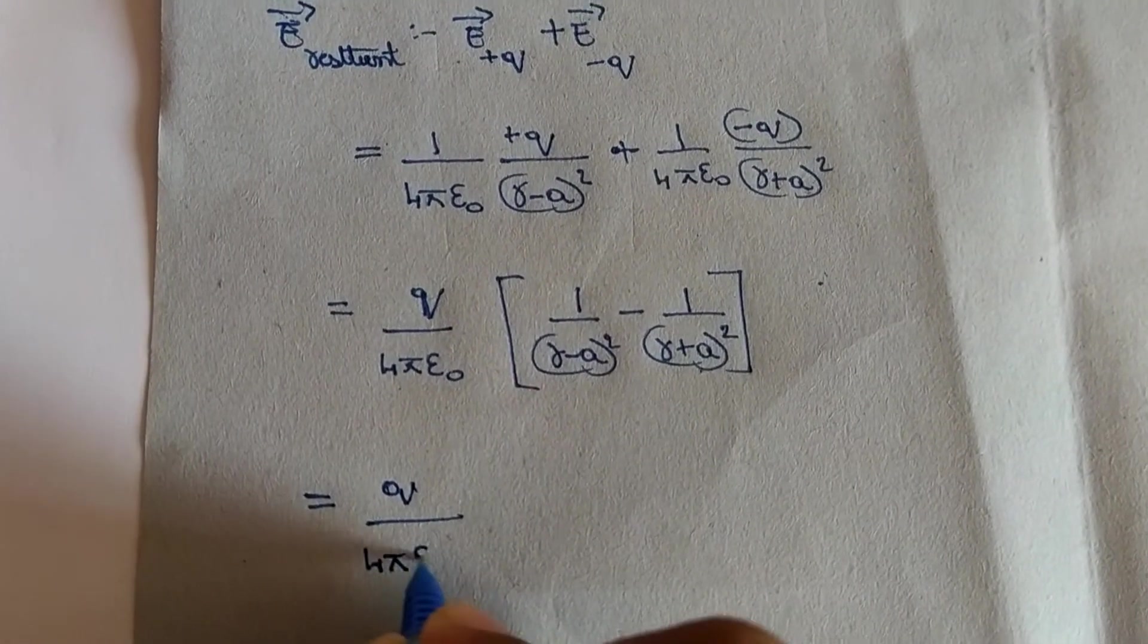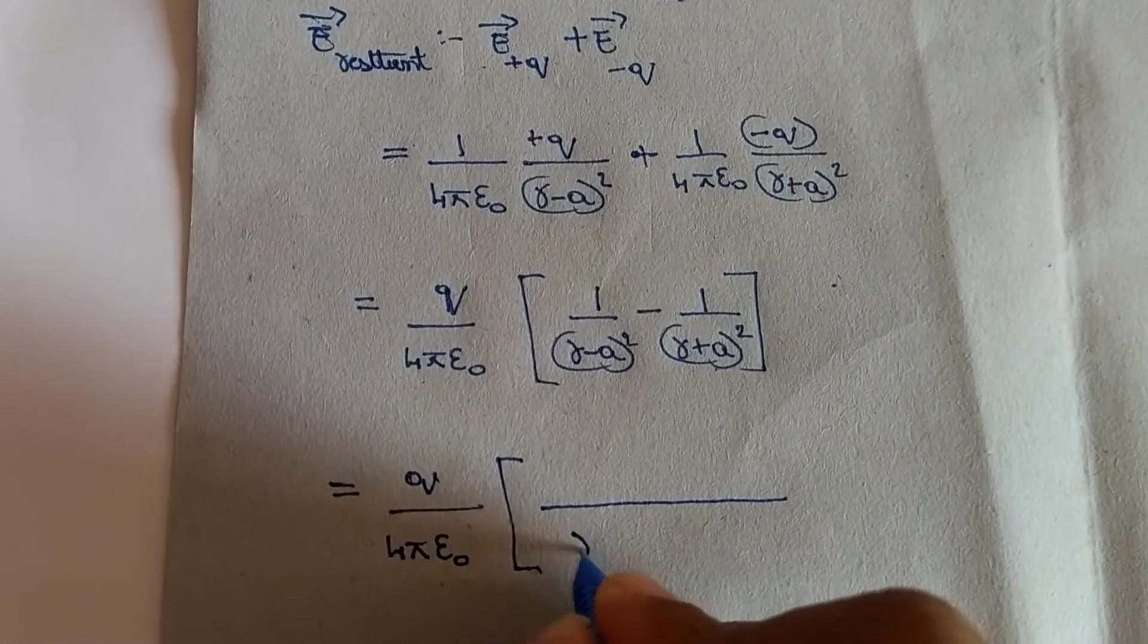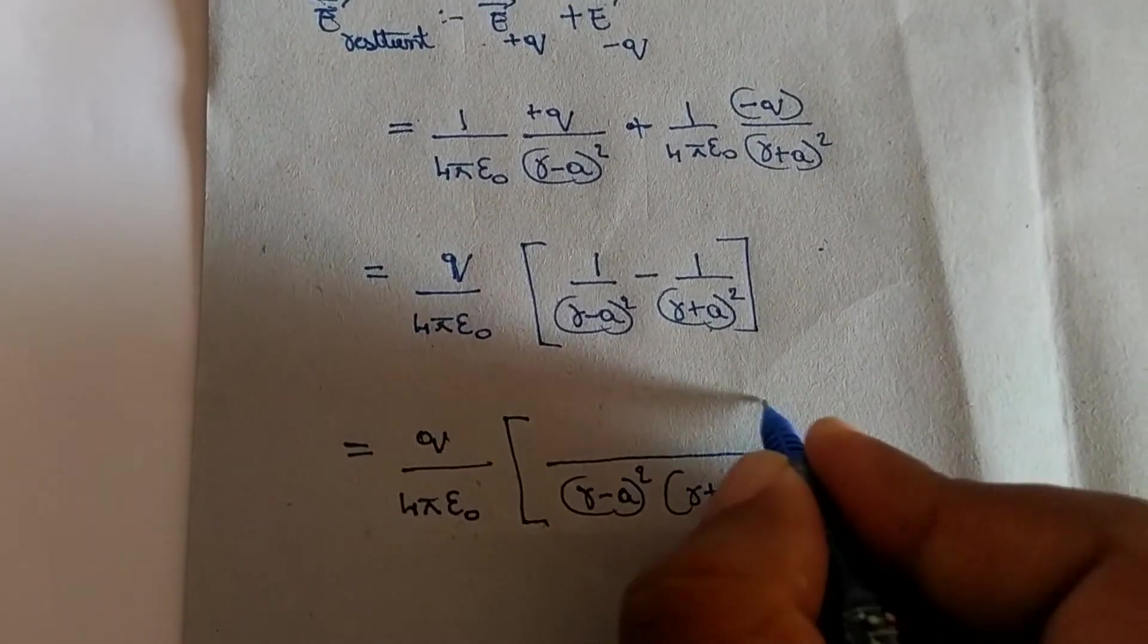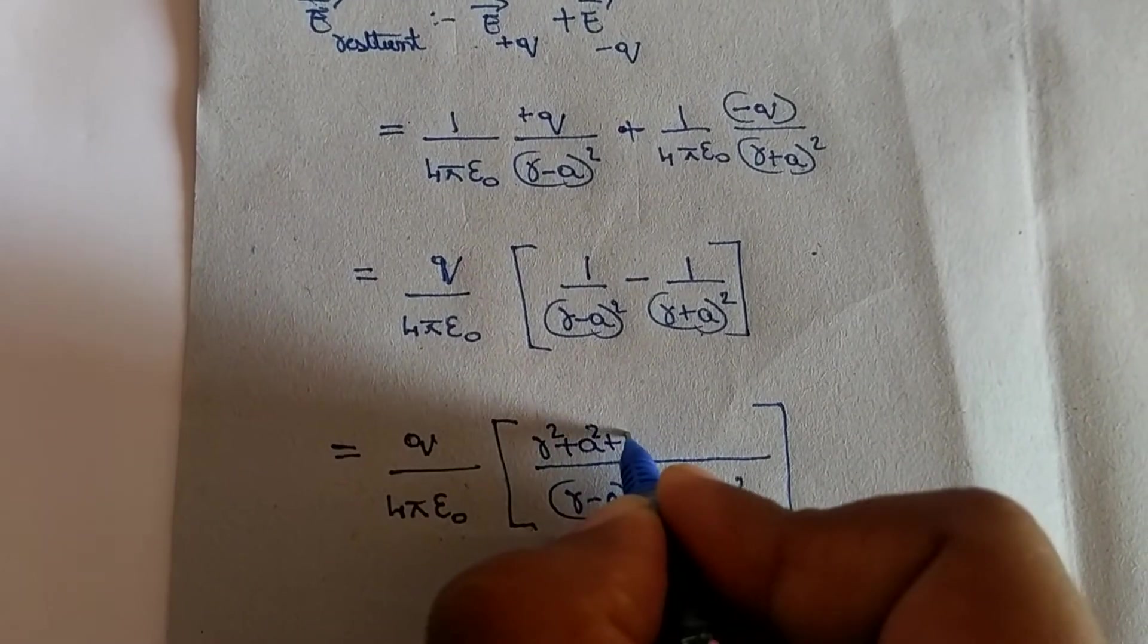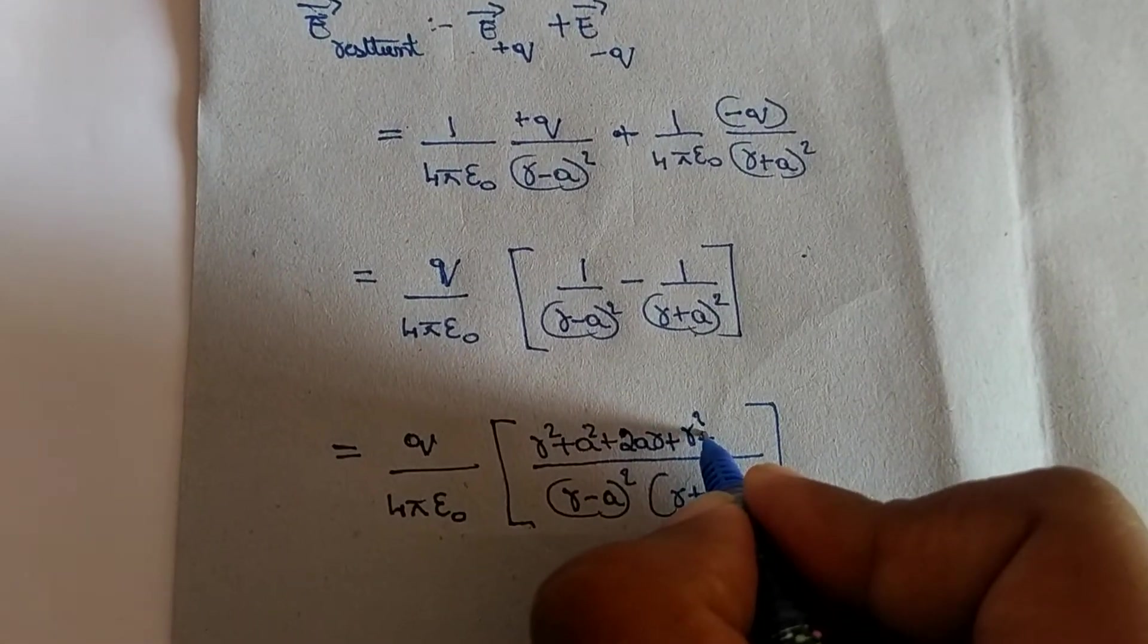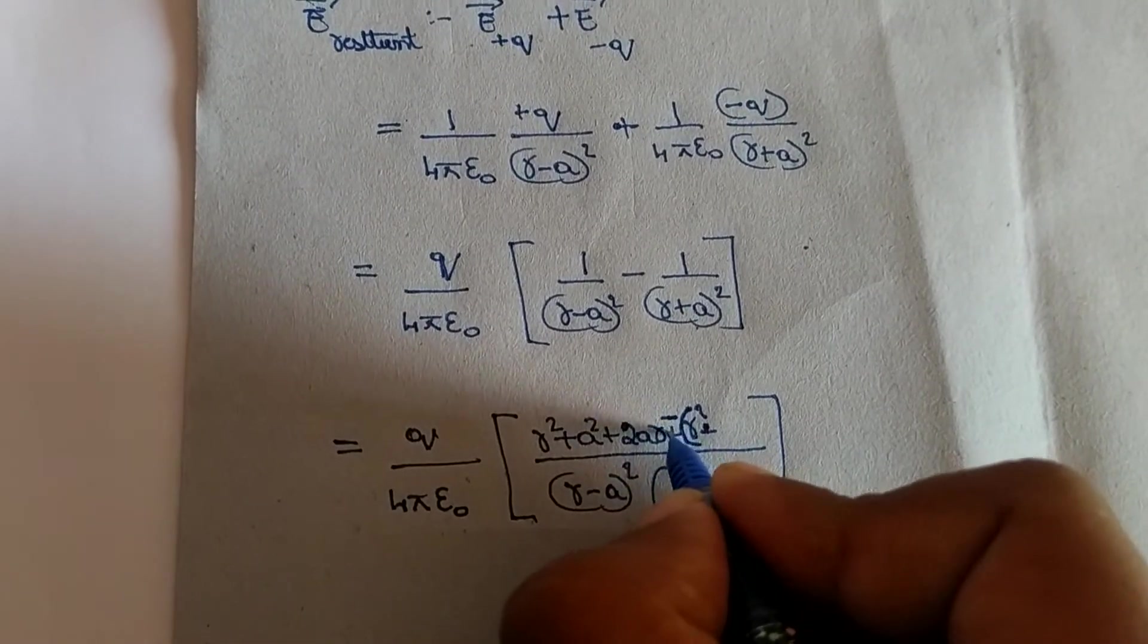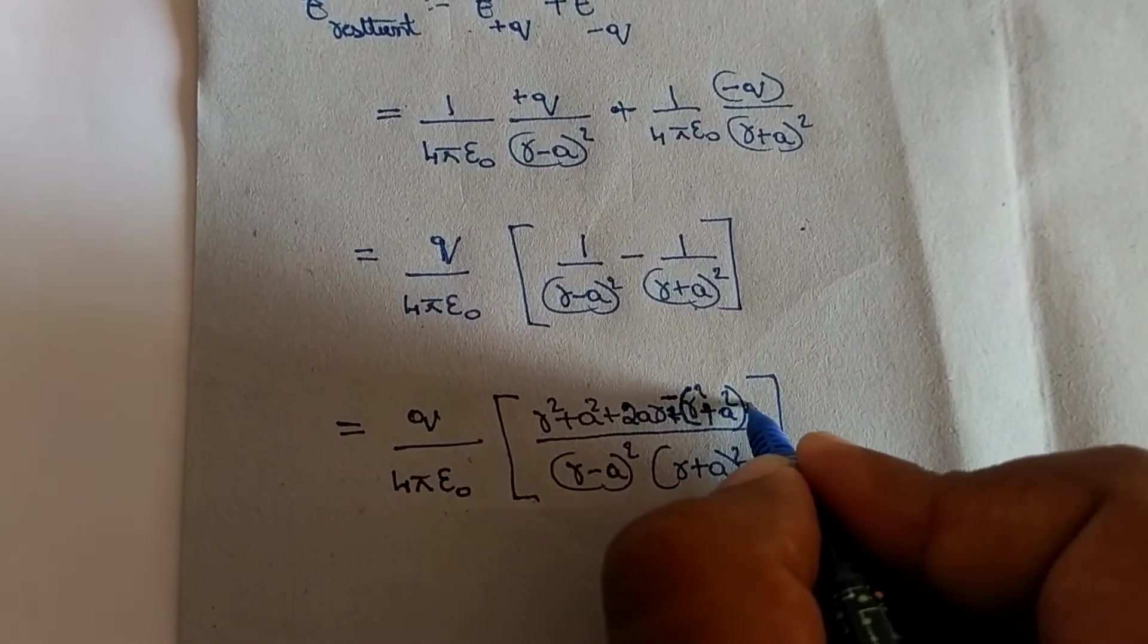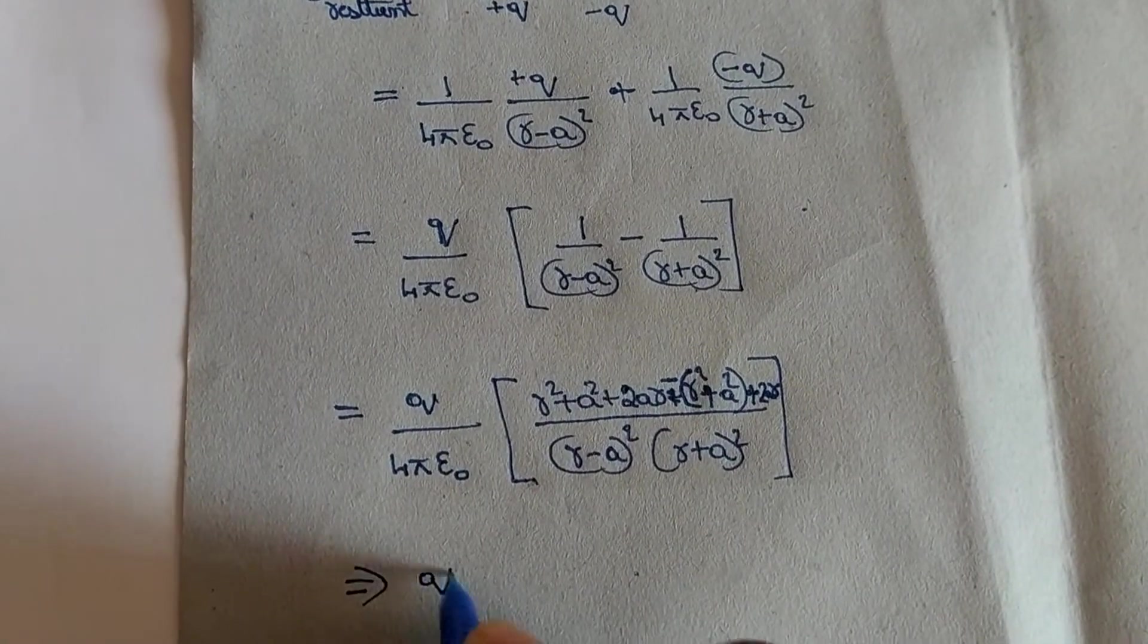This becomes Q by 4 pi epsilon 0, 1 by r minus a whole square minus 1 by r plus a whole square. I'm taking LCM, r minus a whole square, r plus a whole square.